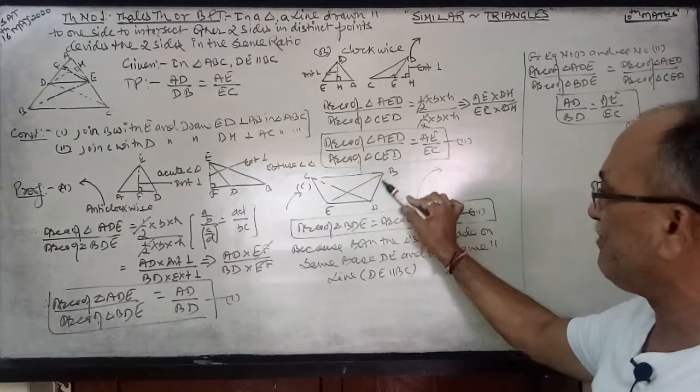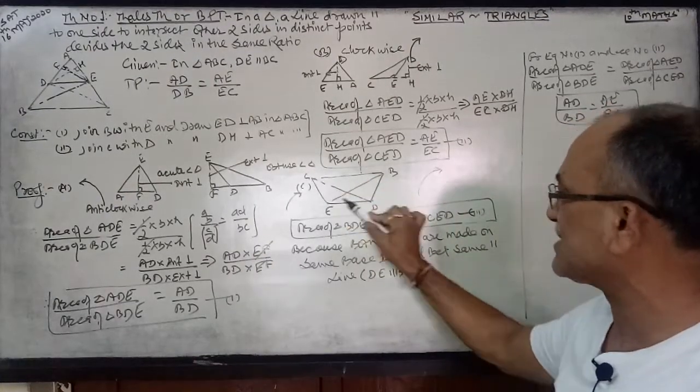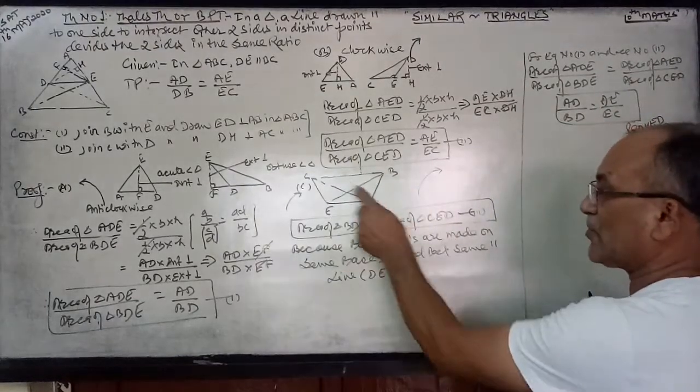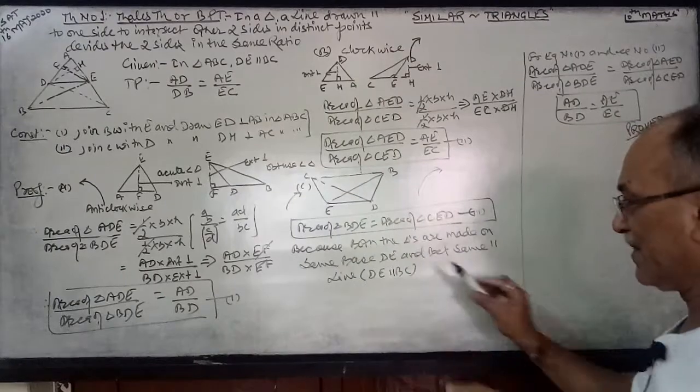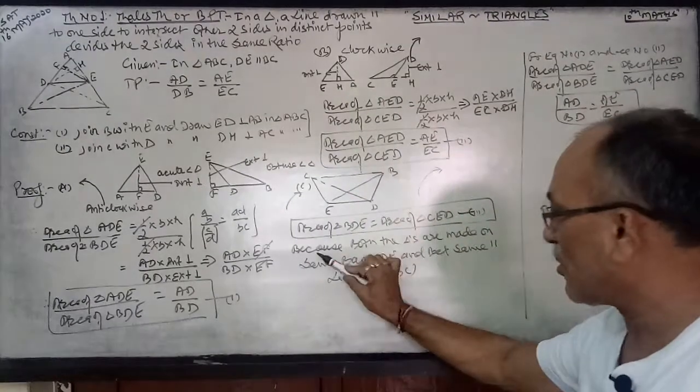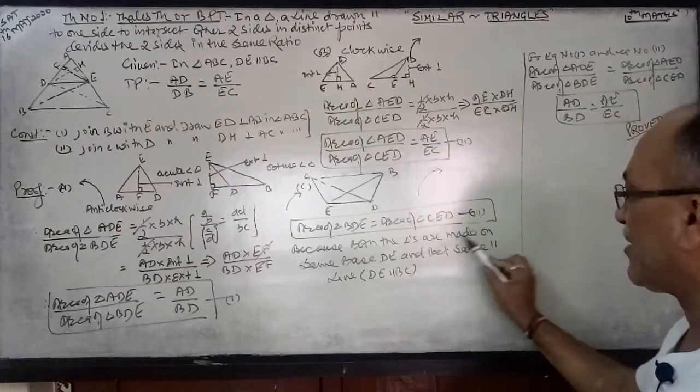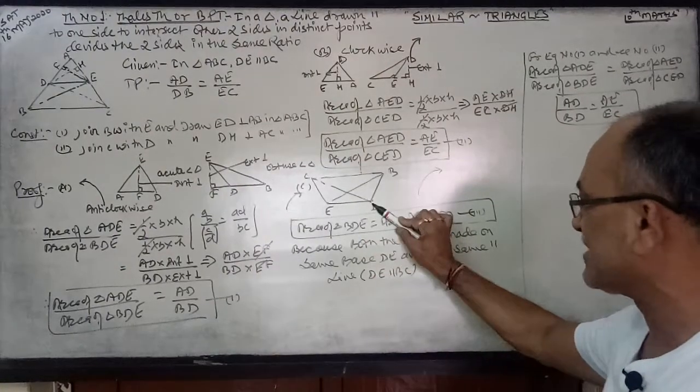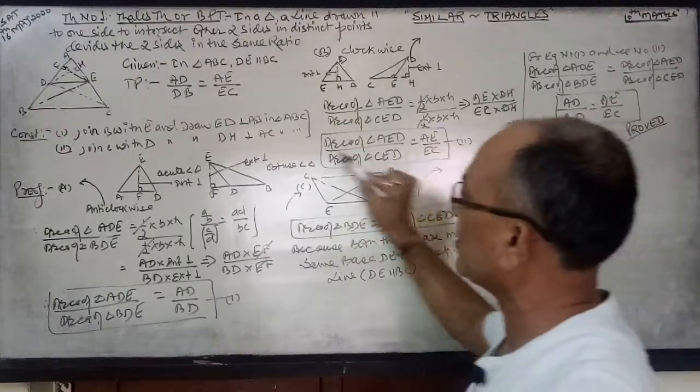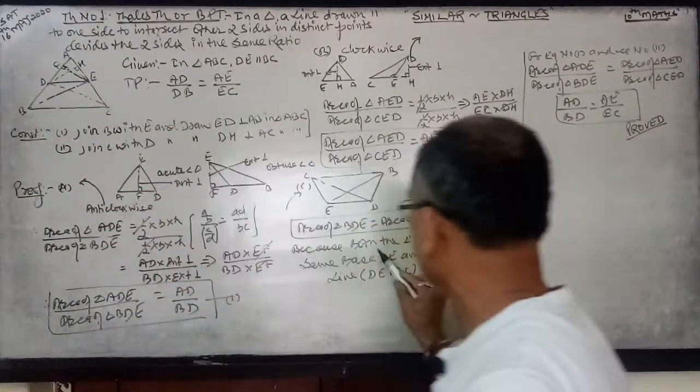So now ED is coming base and BC is going out. One triangle is BDE and the other triangle is CED. The area of triangle BDE equals area of triangle CED. Why is this equal? Because both triangles are made on the same base DE and between the same parallel lines. DE is parallel to BC.